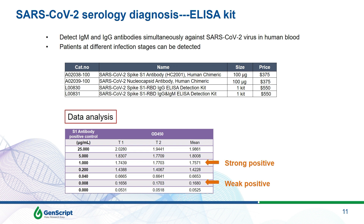For serology diagnosis, GenScript has also generated ELISA kits to detect IgG and IgM, and these kits are available on the market. They are designed for looking at IgG and IgM analysis from patient blood samples. The antibodies are circulating in the blood, making it a simple blood test, and you can detect either a weak positive or strong positive depending on the point at which infection occurred. This is a good way to cross-reference testing with qPCR.